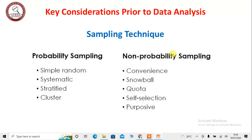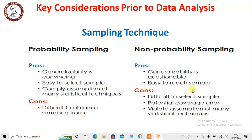These are called non-probability. I shall not go into detail on all of these sampling techniques, but there are some pros and cons. In probability sampling, generalizability is convincing — it is high, not questionable. But in the case of non-probability sampling, generalizability is questionable because we have used non-probability sampling technique for collection of our data.